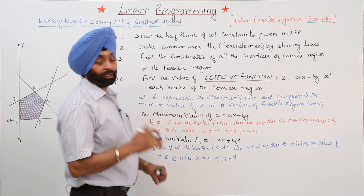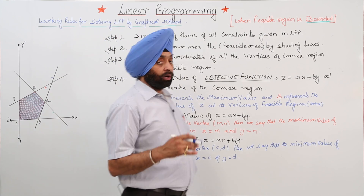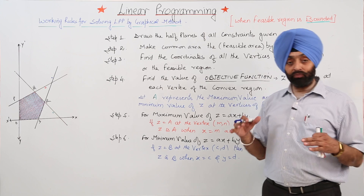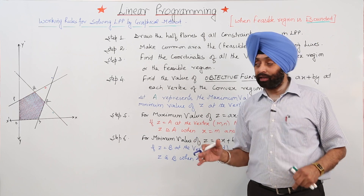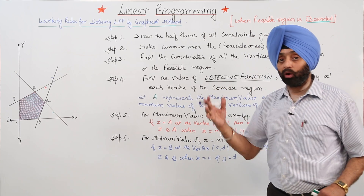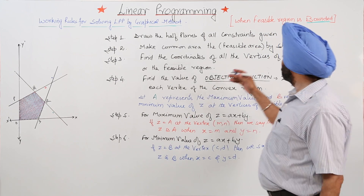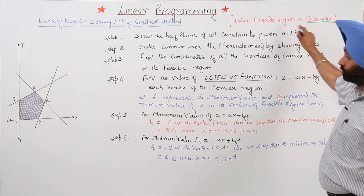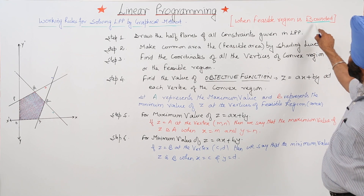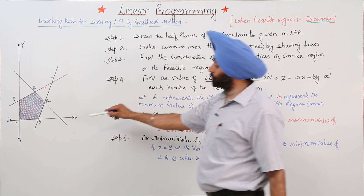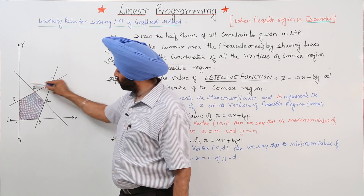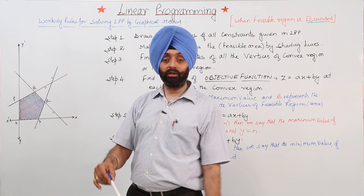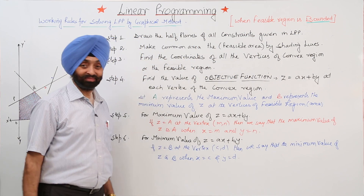These were the basic steps for how to locate the maximum or minimum point in a given feasible area which is bounded. We have done all these steps for the bounded region. The feasible region is bounded — meaning we can make a circle around it. That is called a bounded area. Thank you.